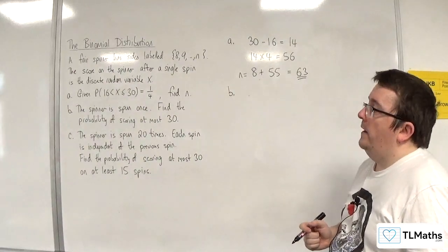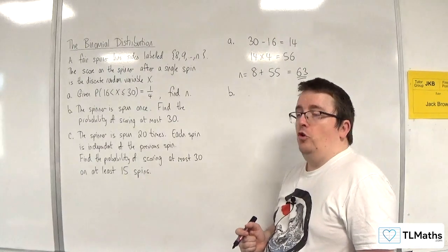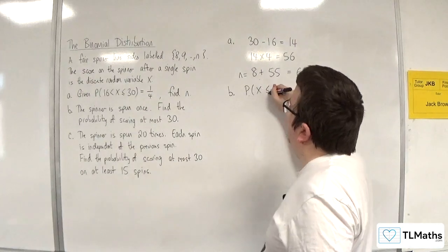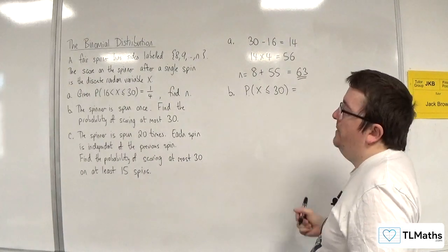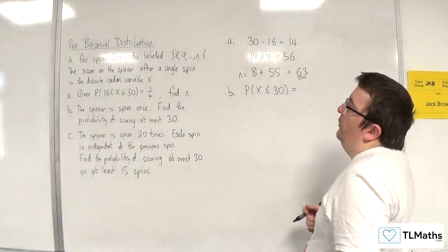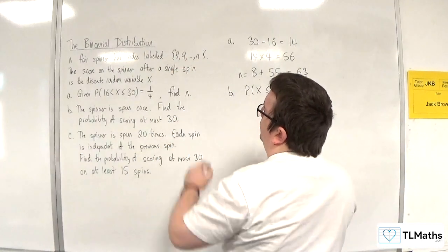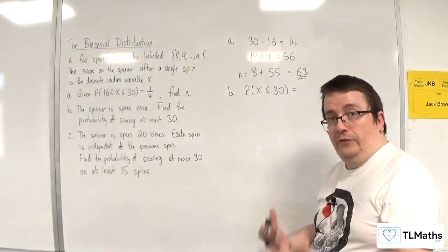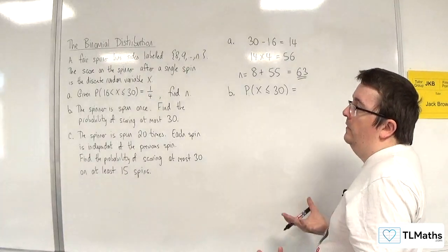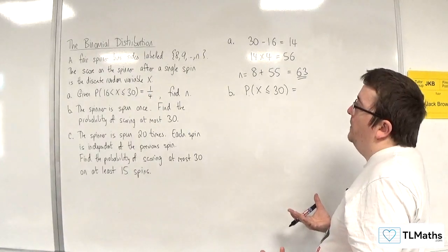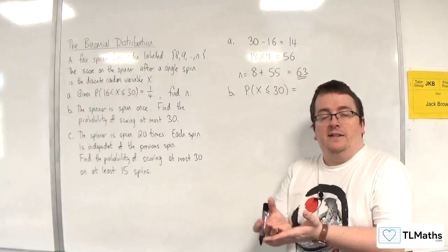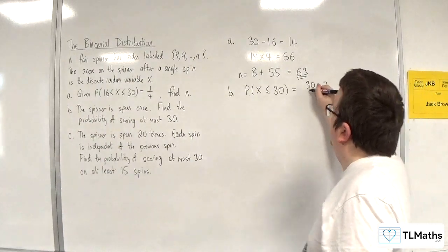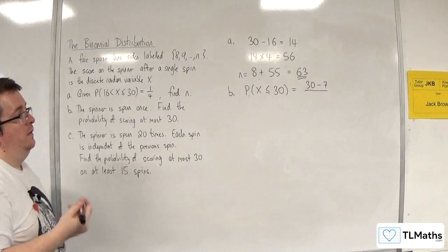Part B: the spinner is spun once. Find the probability of scoring at most 30. So the probability of x being at most 30 is less than or equal to 30. Now we want to go from 8 up to 30, so that would be 30 take away 7. Now if you want to take away 8 and then add 1, you can do it that way if you like, but you need to make sure you're including 8 in there. So 30 take away 7.